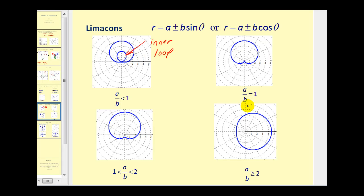If a divided by b is equal to one, we have a special case that we call a cardioid, which has a heart shape. If a divided by b is between one and two, we have what's called a dimpled limaçon. And when a divided by b is greater than or equal to two, we have what's called a convex limaçon.